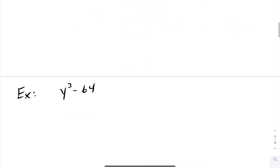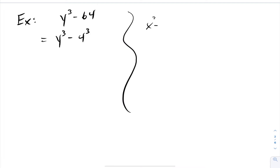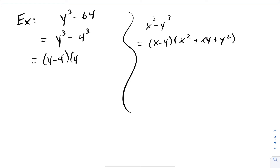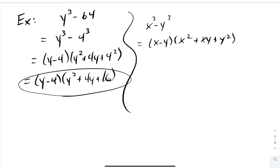Let's try another. This next one is a subtraction, so we have a difference of cubes. We need to express this as a power of 3. The y is already a power of 3, and 64 as a power of 3 is 4 cubed. Using the difference of cubes formula, x cubed minus y cubed factors into x minus y times x squared plus xy plus y squared. This factors into y minus 4, times y squared plus 4y plus 4 squared, which simplifies to y minus 4, times y squared plus 4y plus 16. So y cubed minus 64 is fully factored.